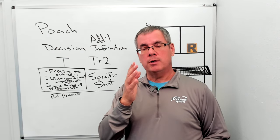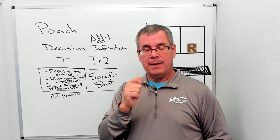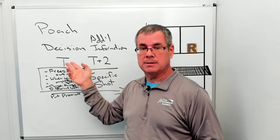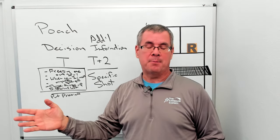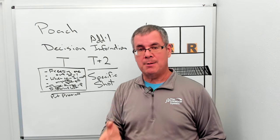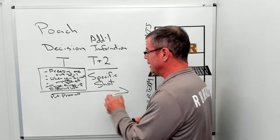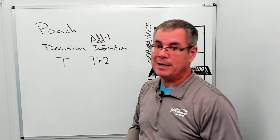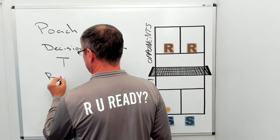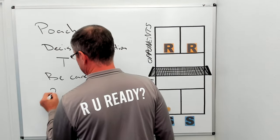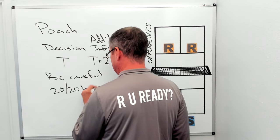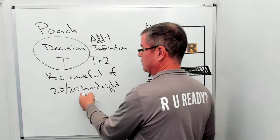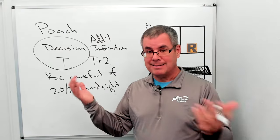As a pickleball player you're going to face situations where you have to make decisions based on incomplete information. The key is to understand that that's fine, because you have to make the decision at time T. You cannot wait for the information. A lot of times the decision needs to be made before you have all the information. Knowing this, we want to avoid the risk of hindsight — avoid that 20/20 hindsight — because what happens is we start second-guessing our decisions.